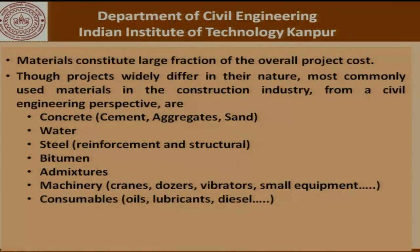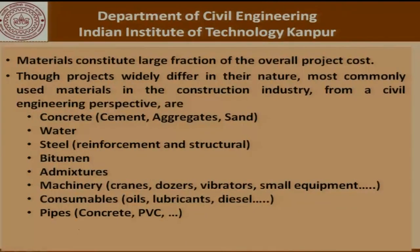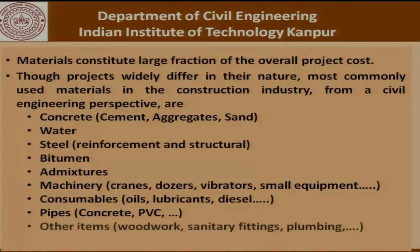The machinery could be cranes, dozers, vibrators, small equipment and the like. Consumables would be oils, lubricants, diesel and so on. There could be pipes which could be concrete, PVC, steel and so on, and many other items — woodwork, sanitary fittings, plumbing and all that, depending on what kind of construction project we are talking about.